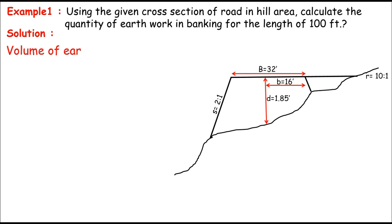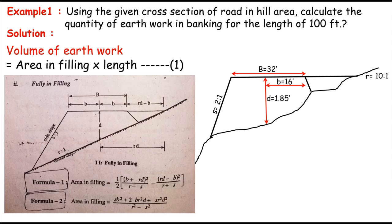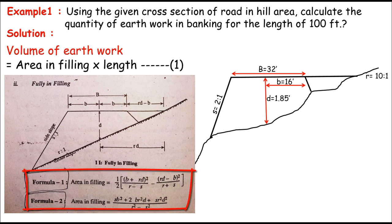And in the solution, remember, the volume of earthwork must be the sectional area in filling times the length of the road. And for the cross sectional area, when the section is fully in filling, we can use these two formulas. These formulas are so accurate. I have taken this screenshot from a book just for the reference. If you remember, the second formula is already used in the previous video. So I'll use the first formula.